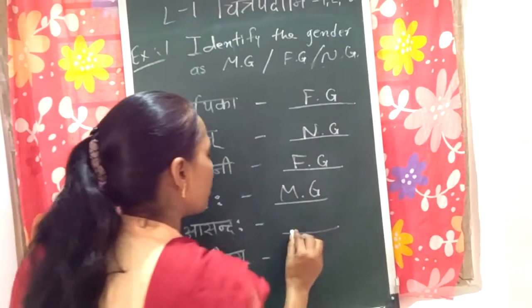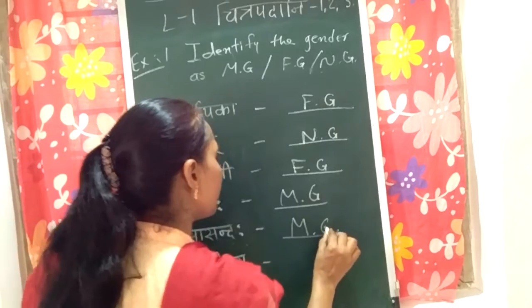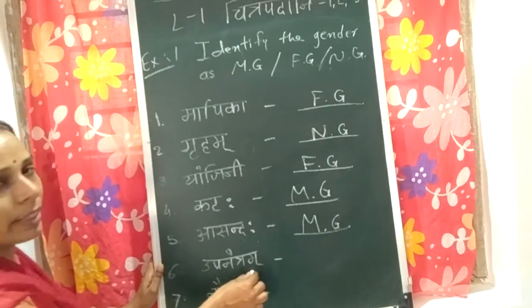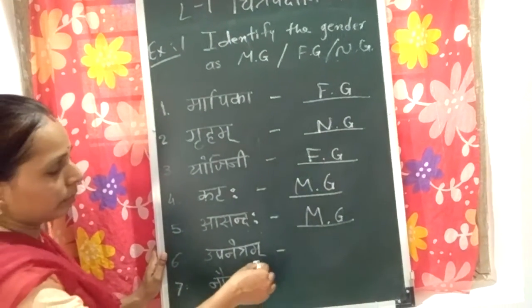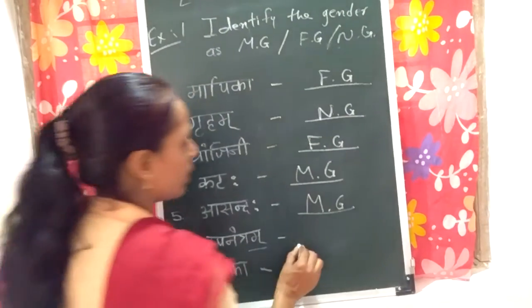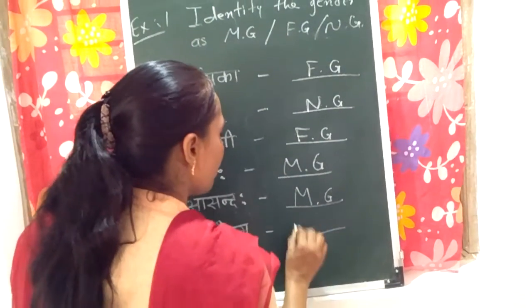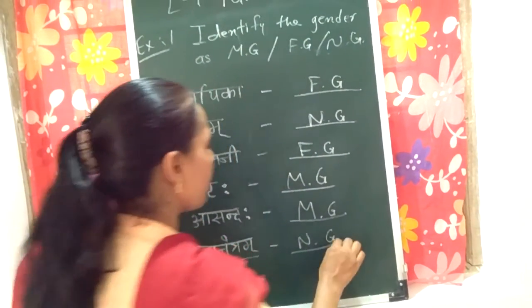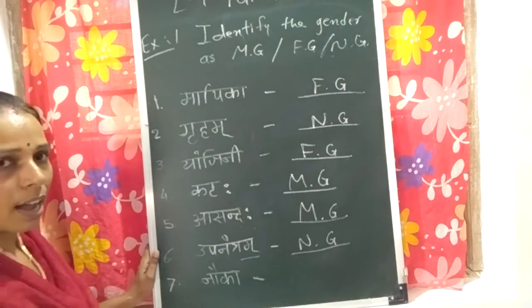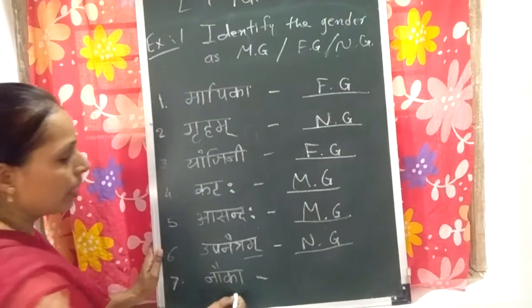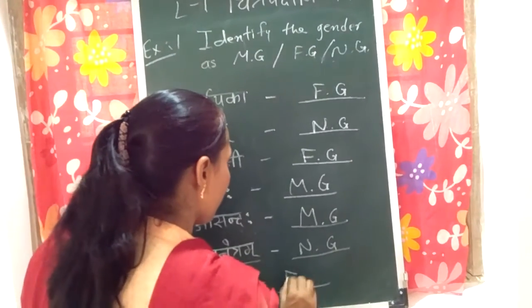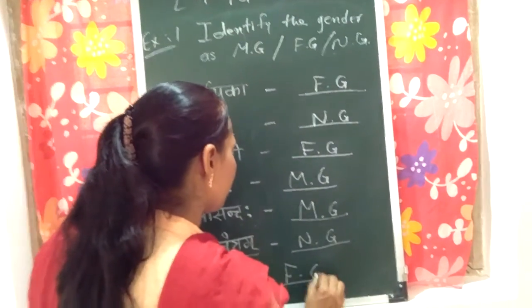So again it is masculine gender. The word ending with 'am' is neuter gender, and the word ending with 'ā' is feminine gender.